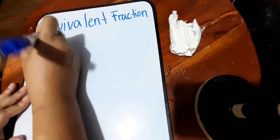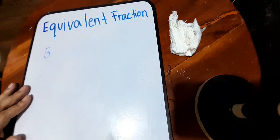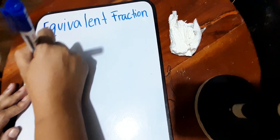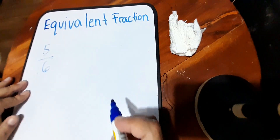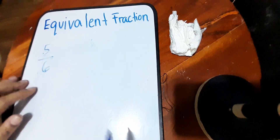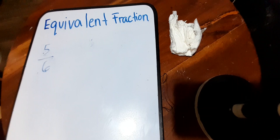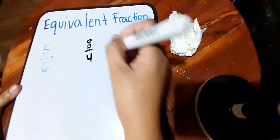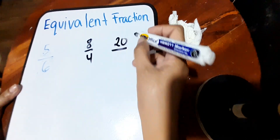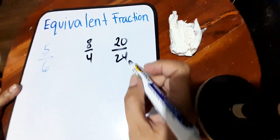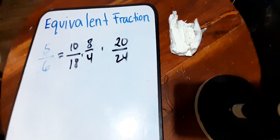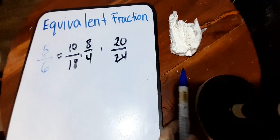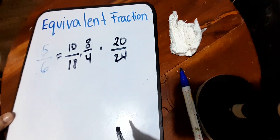Now, what if there's a fraction — let's say five-sixths — and we want to find its equivalent fraction from given choices: eight-fourths, twenty over twenty-four, and ten-eighths. If we are asked to find the equivalent fraction of five-sixths from these given fractions, how are we going to do that?